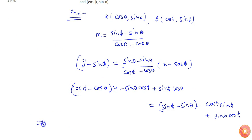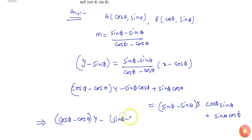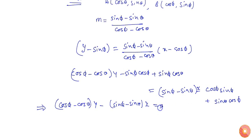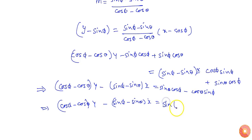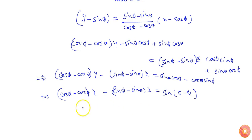From here I can see that the equation will be: (cos phi minus cos theta)y minus (sin phi minus sin theta)x equals sin theta cos phi minus cos theta sin phi. Or I can say it equals sin(theta minus phi). So this is the equation of the line.